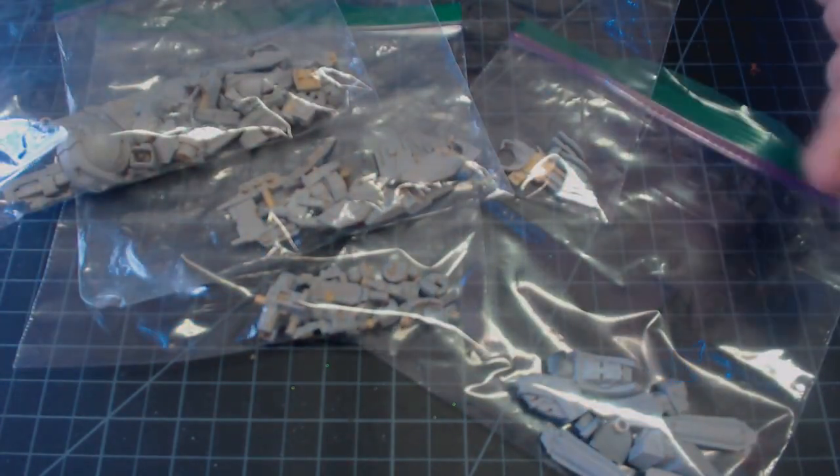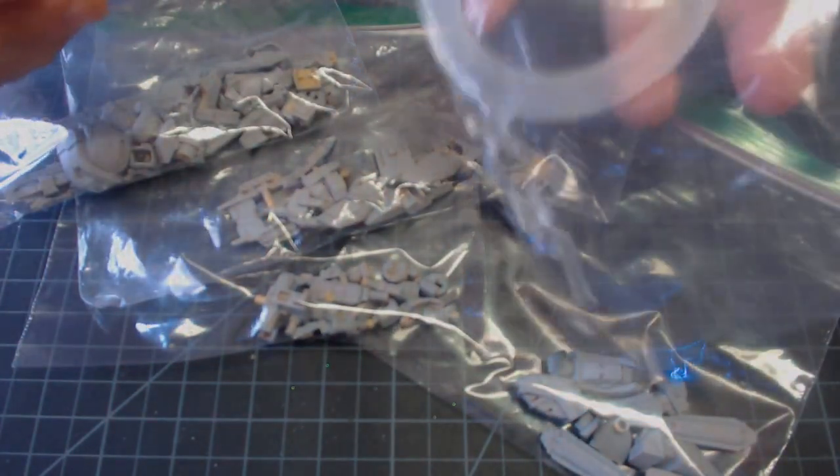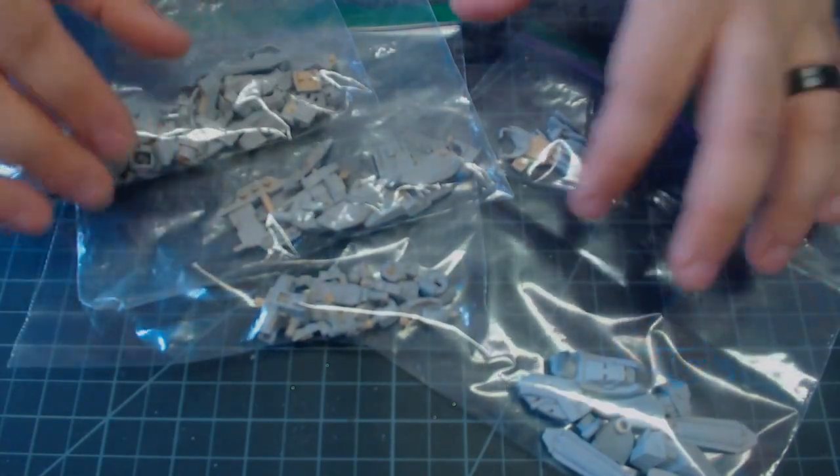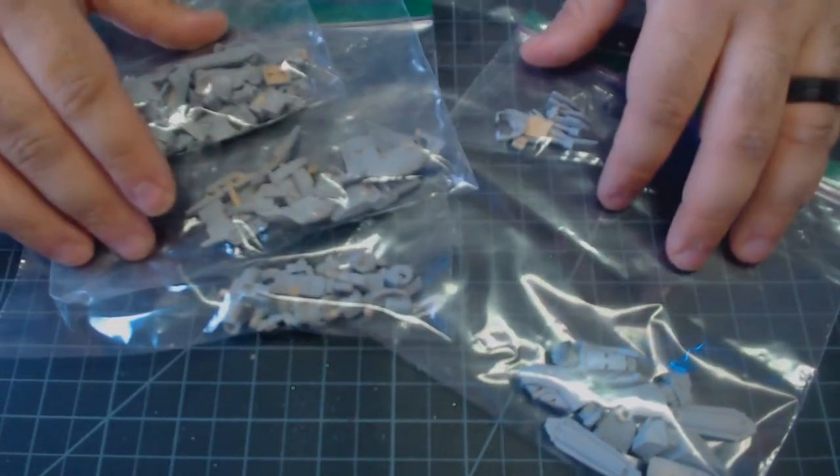Now, for me, the first step in painting is figuring out how I'm going to paint. For this model, I'm going to be painting it by color, and because I'm painting it by color, I'm going to break the entire kit down into its parts.